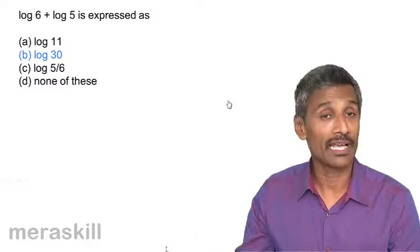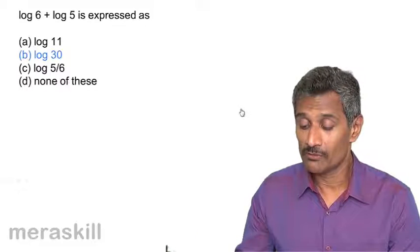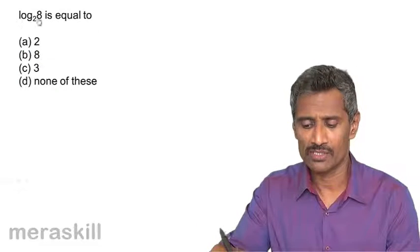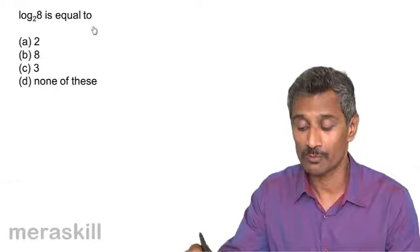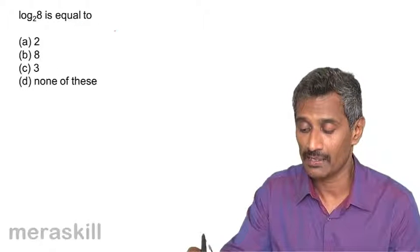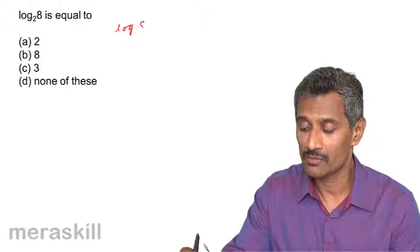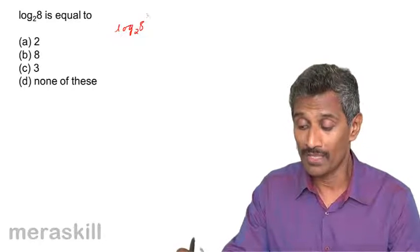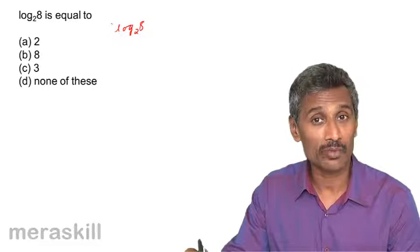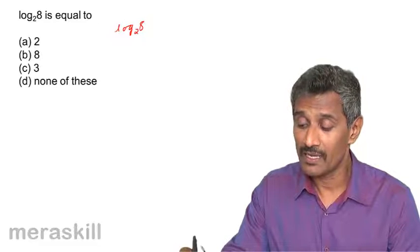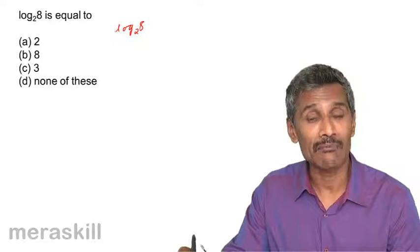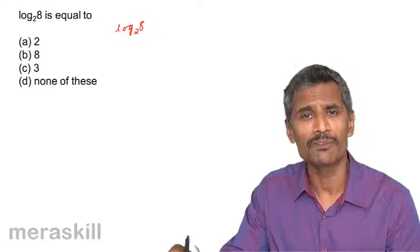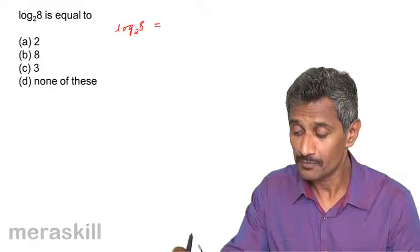Let's move on to the next example: log 8 to the base 2. Here we're going to use two rules of logarithms — first, how the index becomes the coefficient, and second, that log of any number to the same base is 1. These two rules will often be used.